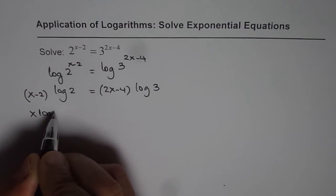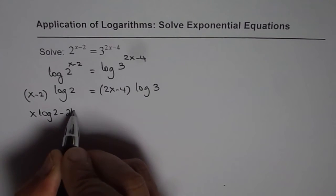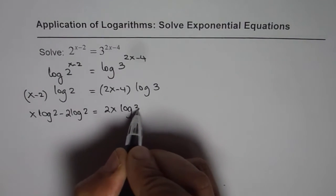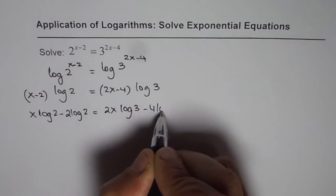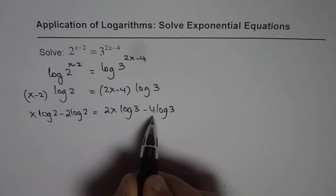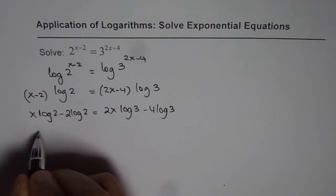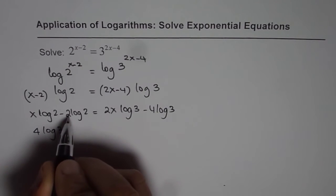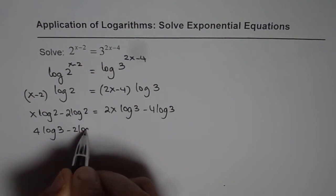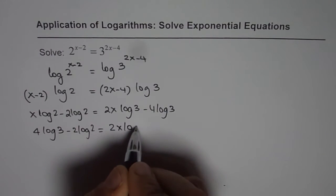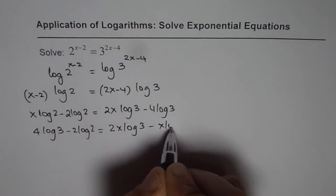So we get x log 2 minus 2 times log 2 equals 2x log 3 minus 4 log 3. Now bring the terms with x together and the constants together. So this constant minus 4 log 3, I'm bringing it on the left side, it becomes 4 log 3. We already have minus 2 log 2 equals 2x log 3 minus x log 2.